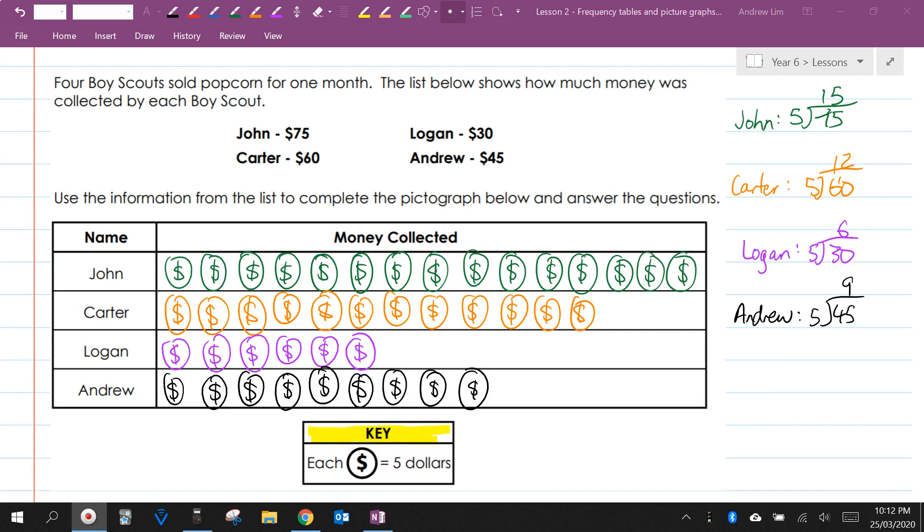Okay, so here are my answers. Because John collected $75 and each dollar sign represents $5, I need to work out how many dollar signs I need to draw. So, I did 75 divided by 5 is 15. So, I knew I had to draw 15 dollar signs. Carter collected $60, so I do 60 divided by 5, which is 12. So, I drew 12 dollar signs. Logan, there are six dollar signs, and Andrew, there are nine.